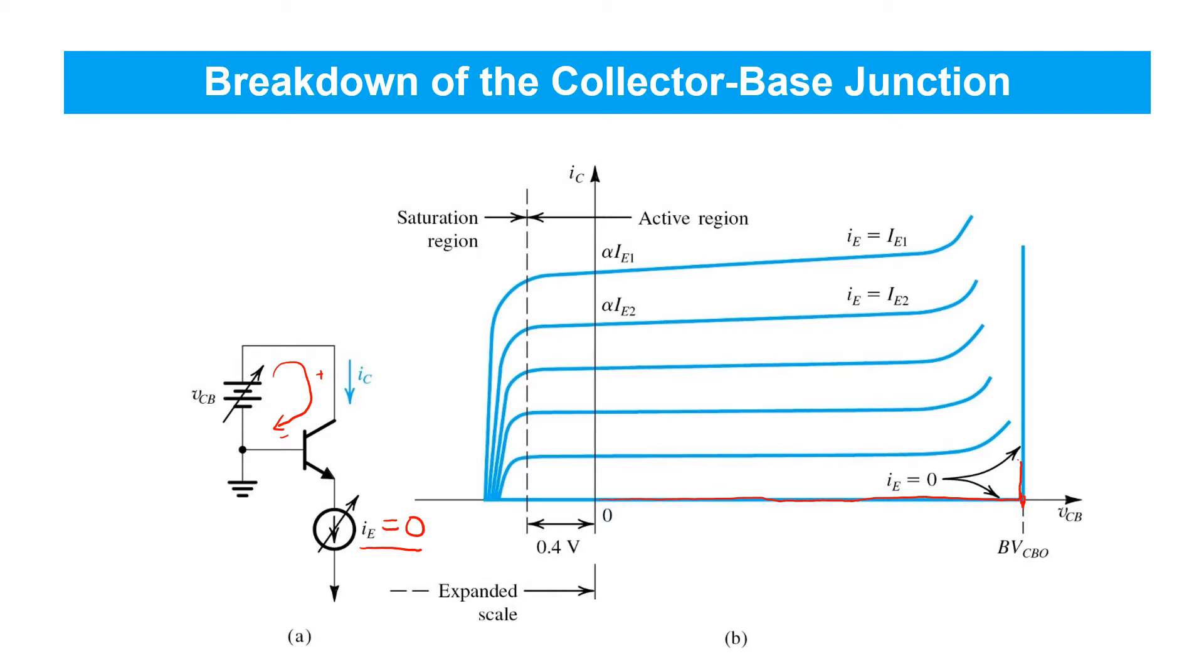So that's just simply breakdown of the collector base junction with no forward bias on the base emitter junction. Now, of course, the cartoon plot is shown here with a very sharp corner and in real life the corner might not be so sharp, but certainly the current would increase rapidly once we reach the breakdown of that junction.